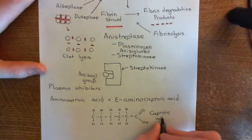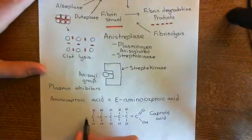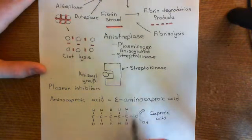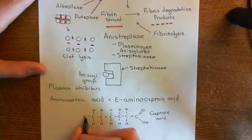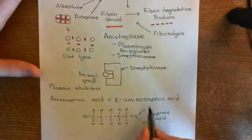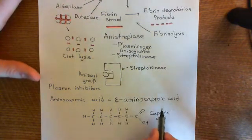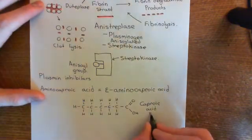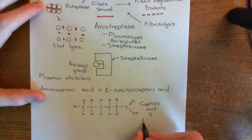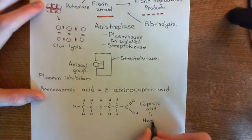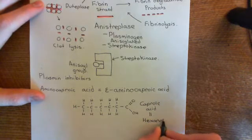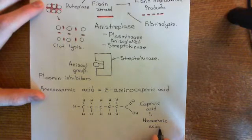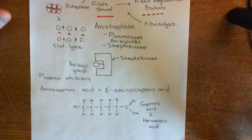So this is caproic acid. But we want epsilon aminocaproic acid. Caproic acid's modern name would be hexanoic acid — it's not really referred to as caproic acid except in biochemistry anymore; chemists will call this hexanoic acid.